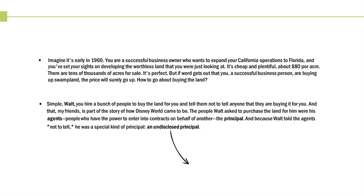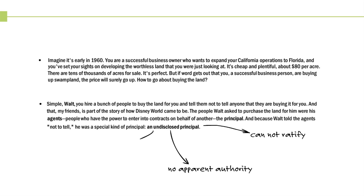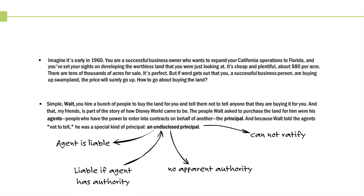When the principal is undisclosed, there's no way to have apparent authority, and there's no way for the principal to ratify. When the third party doesn't know of the existence or identity of the principal, the agent is going to be liable to perform that contract. The principal is also liable if the agent had actual authority. When the third party later finds out the identity of the principal, they'll have to choose who they want to hold liable. When the principal is undisclosed, the agent is liable to the third party.